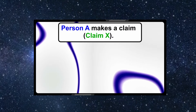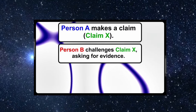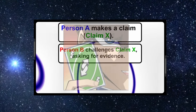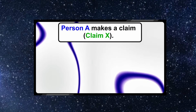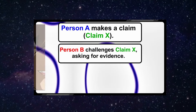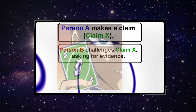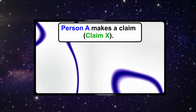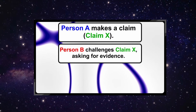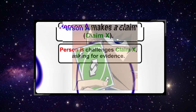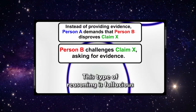The structure of shifting the burden of proof fallacy is as follows: Person A makes claim X. Person B challenges claim X asking for evidence. Instead of providing evidence, person A demands that person B disproves claim X. An example of that would be a Christian says, 'My God exists,' and then I ask, 'Can you prove that?' And then the Christian asks, 'Can you prove that my God doesn't exist?' Which again is a nonsensical request, but it's a classic example of shifting the burden of proof. And we see Christians do this over and over and over again.